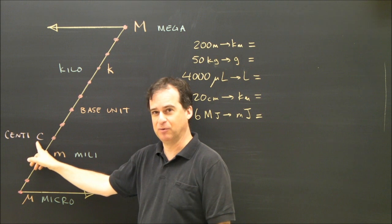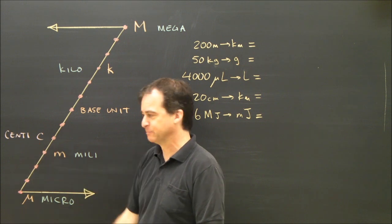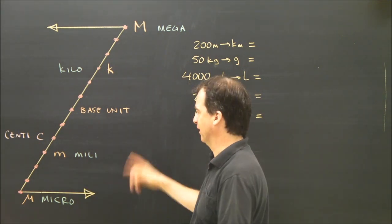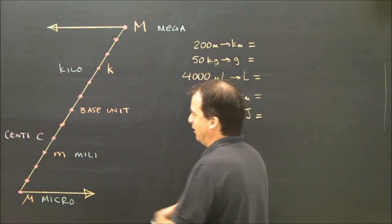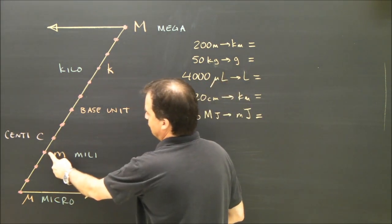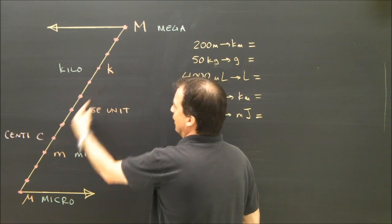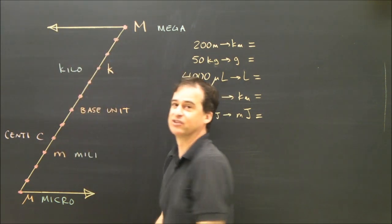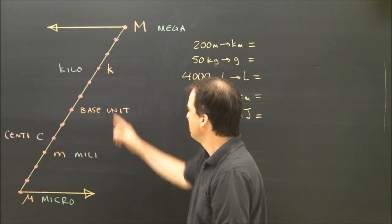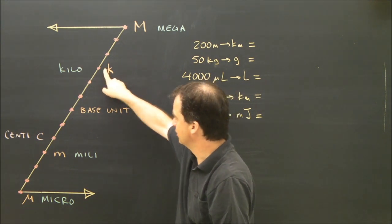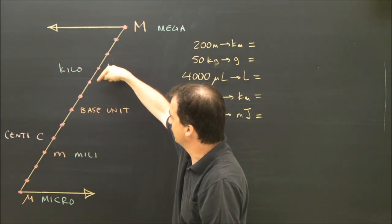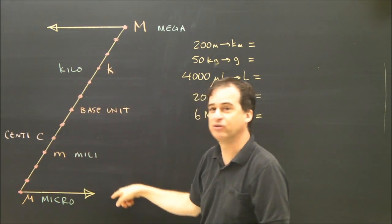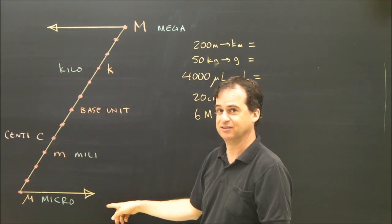Basically, this chart shows you how to convert from one to the other. The idea is if I'm going from milli to kilo, I'm going up, and going up means I move the decimal to the left. If I'm going from kilograms to centigrams — from kilo to centi — I'm going down, and going down means the decimal goes to the right.